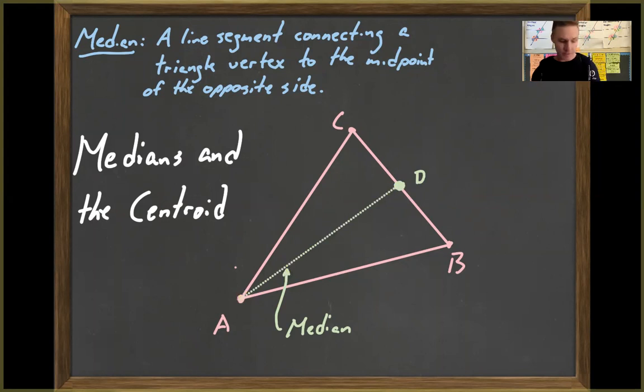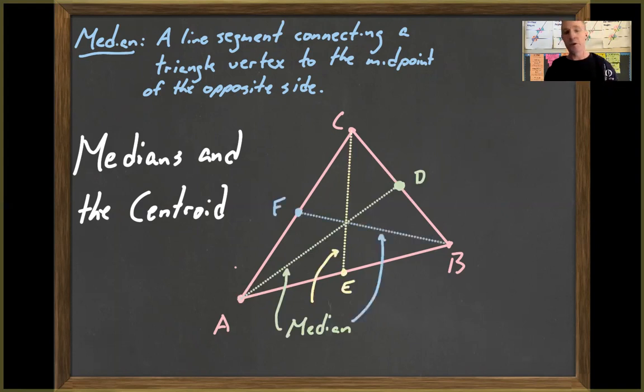So a triangle has actually three medians. So here's another one. And here's the third one. So when you're constructing medians, if you did them correctly, they should all intersect at the same place. And what is this point called? The centroid.